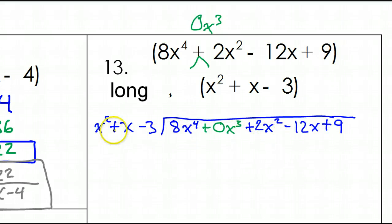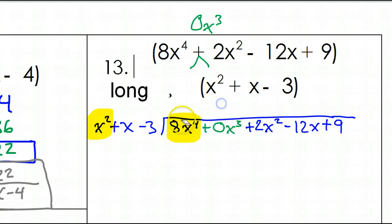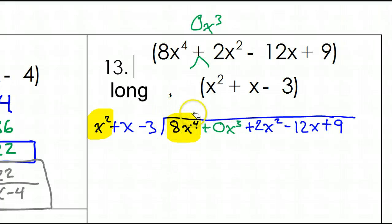Here's how long division works. We start off looking at the first term of each polynomial — the x squared and the 8x to the fourth power. We're asking ourselves: x squared times what is going to give us 8x to the fourth power? We need the 8, and x squared times x squared would make x to the fourth power. So I need 8x squared up here. I like to line up like terms, so I'm going to put my 8x squared in the x squared column.